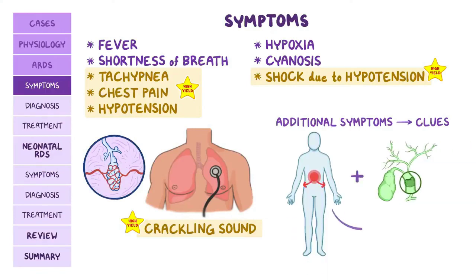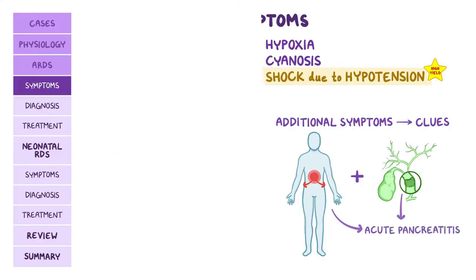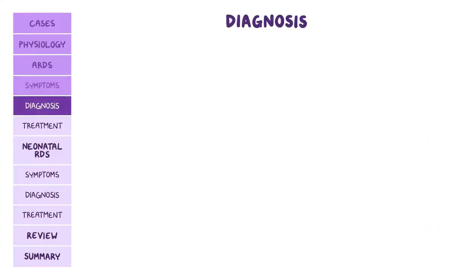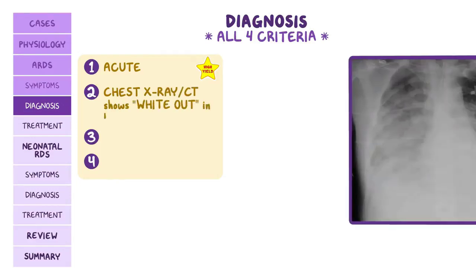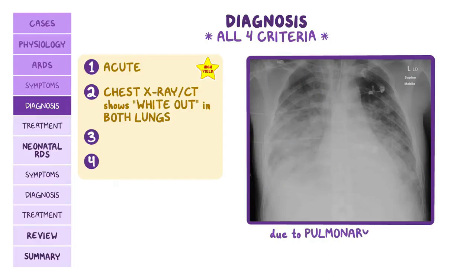Diagnosis of ARDS is typically made when the individual presents all of the following four criteria. First, the symptoms have to be acute, meaning an onset of one week or less. Second — particularly high yield — a chest x-ray or CT scan shows opacities or white-out in both lungs, which is due to pulmonary edema.